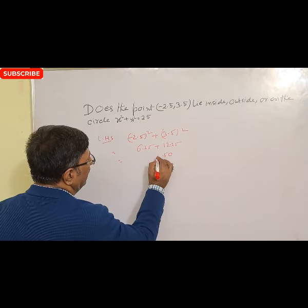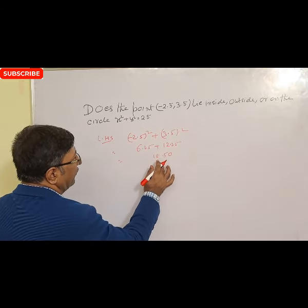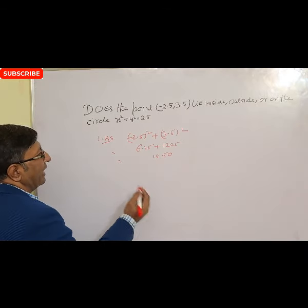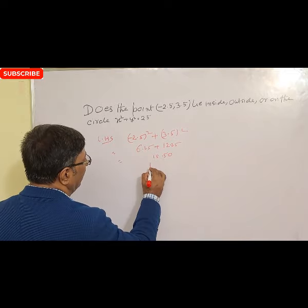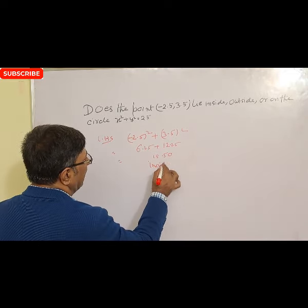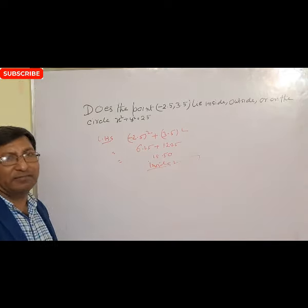When we add this number, this is 10.5, this is 18, 18.50 is what? Less than RHS, less than what? 25. So this is what? Inside. So our correct answer is inside. Thank you.